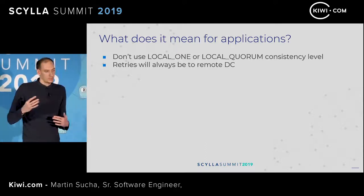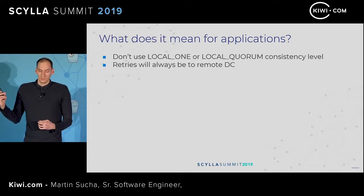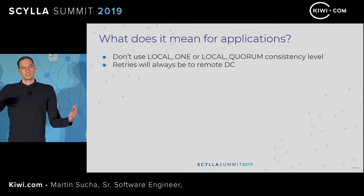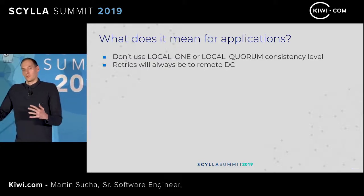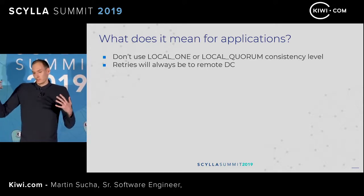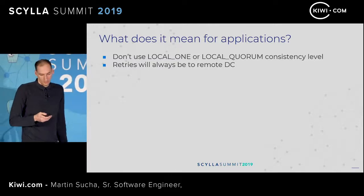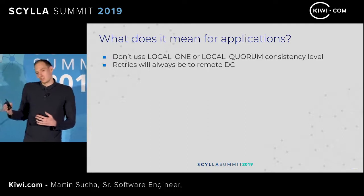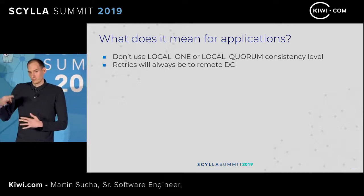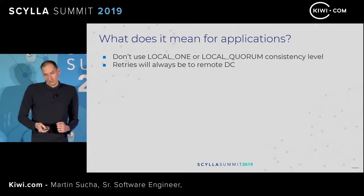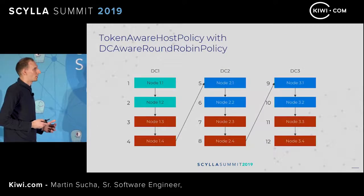We need to make sure that developers are aware of these limitations and know they can't use those local consistency levels. When you search online for which consistency levels to use, you'll most probably find recommendations to use local_one or local_quorum, because a lot of people run clusters with multiple replicas and it makes sense in that case. But we just have one replica, so it has happened that a new developer tried to use these. We have to make sure everyone knows how our cluster topology is set up — not just people assume multiple replicas, but software does as well.